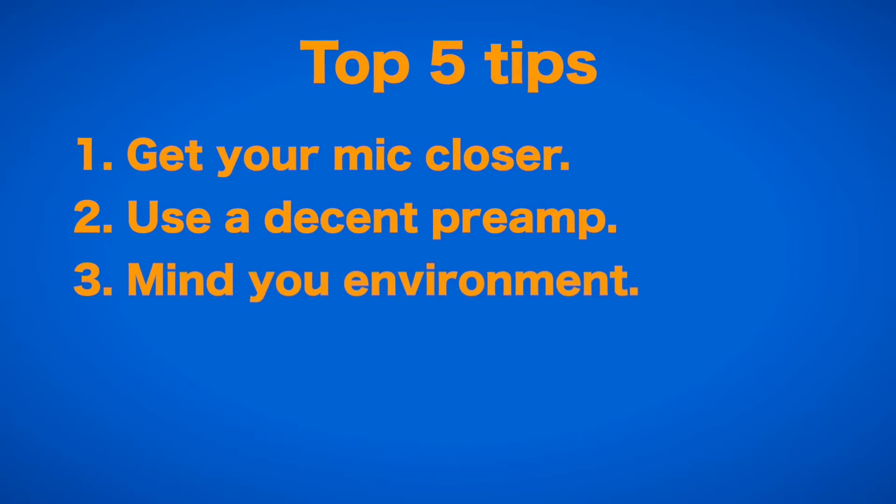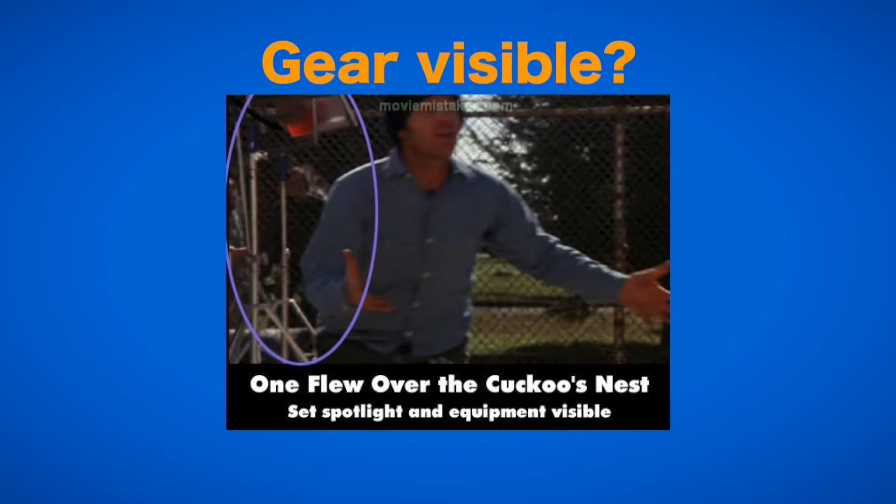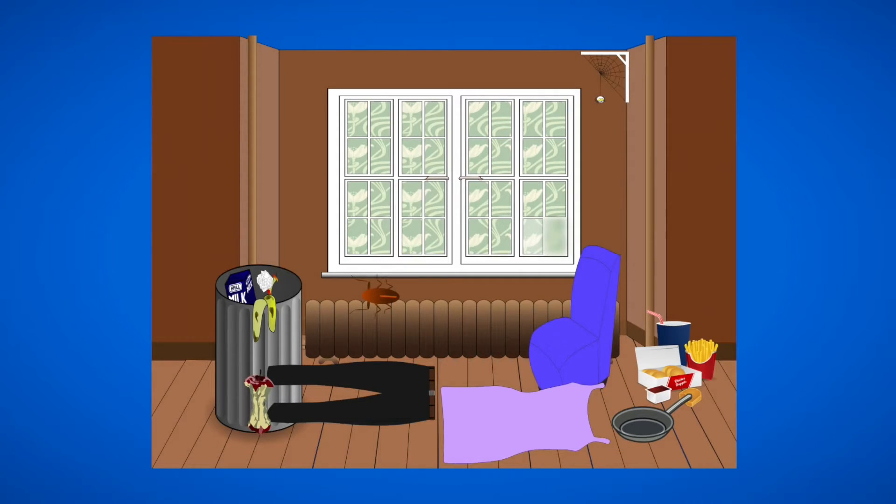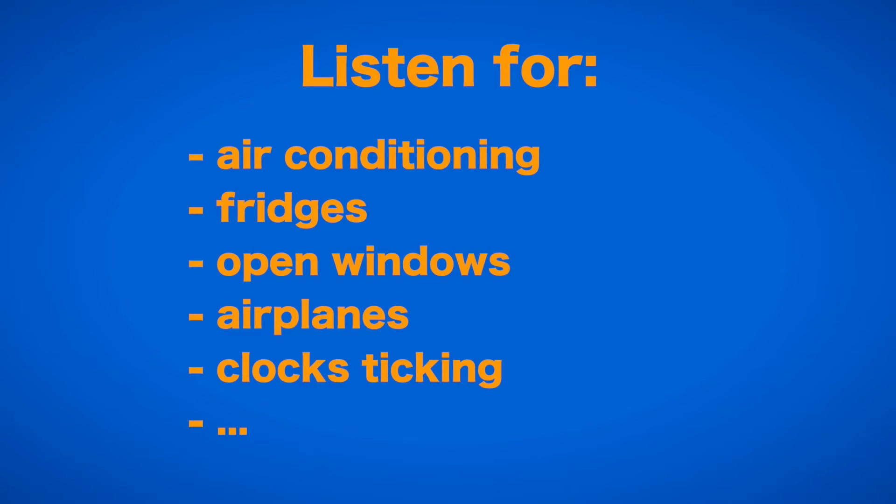The third tip is, mind your environment. Would you film in a room where there is a bunch of ugly junk and gear next to your actor? Well, only if that's part of the scene. Just like you are looking around for visually distracting things before shooting, you should try to pay attention to the sound of the room you are filming in.